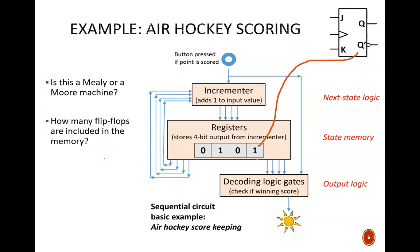Maybe it's a JK flip-flop. If so, this next state logic would be sending four separate J and K instructions simultaneously to tell each flip-flop what to do.